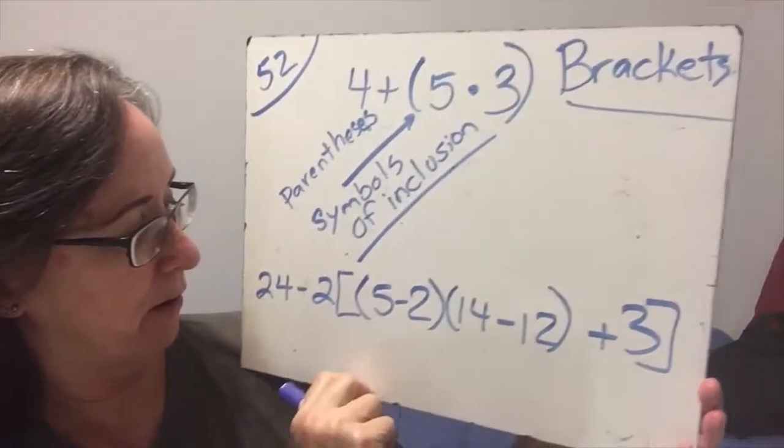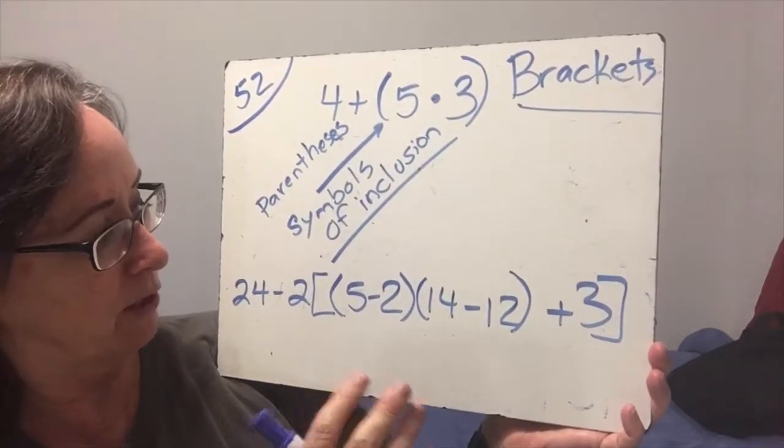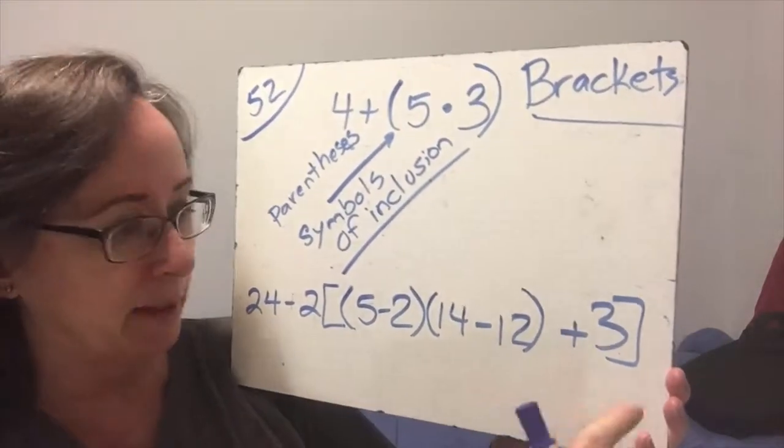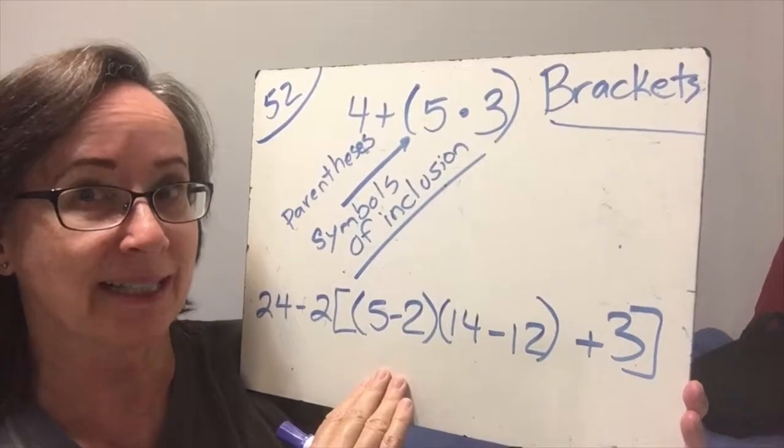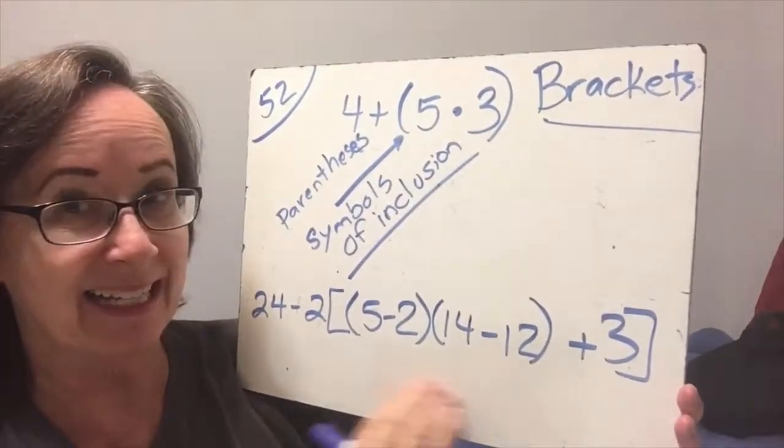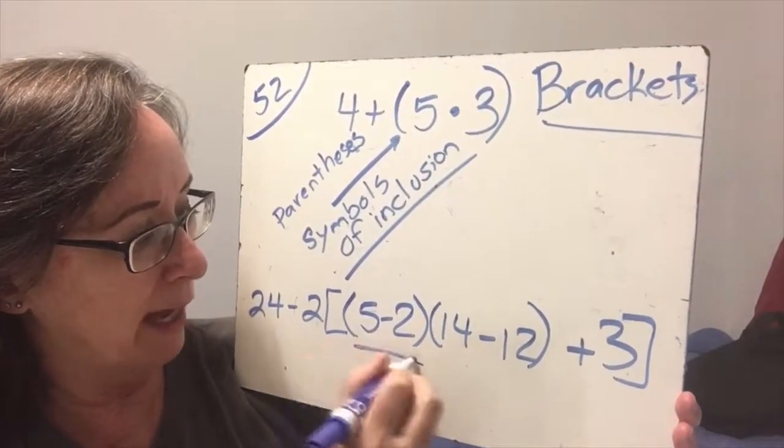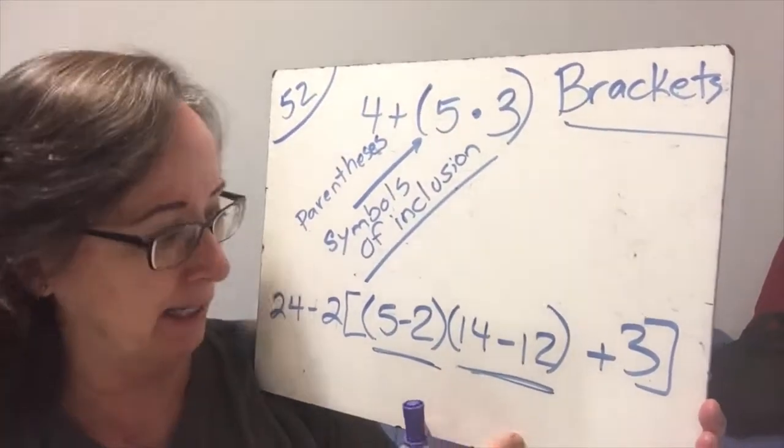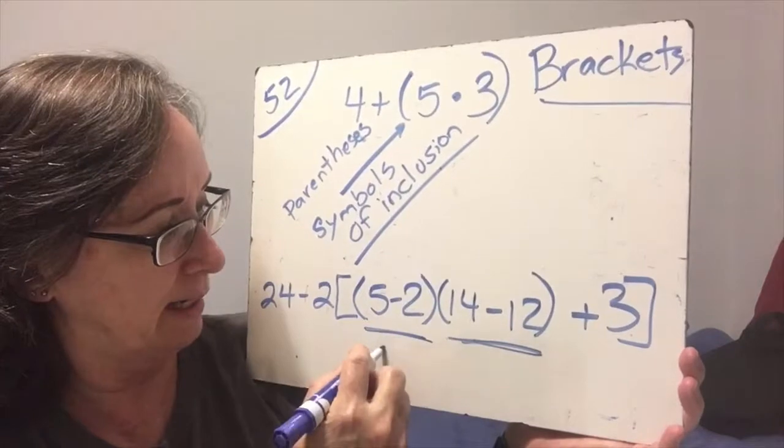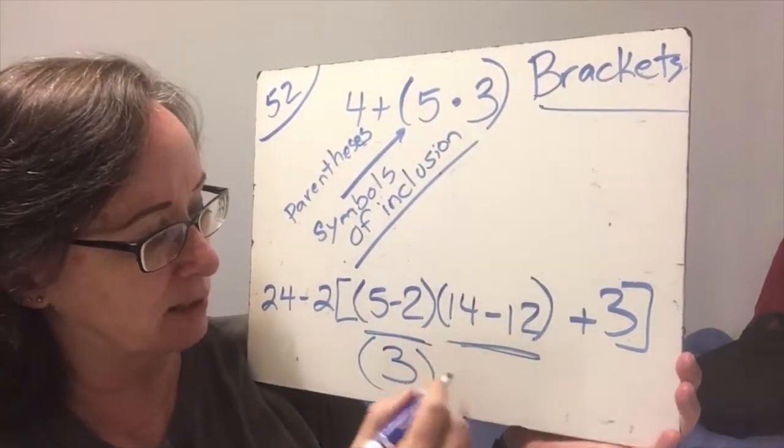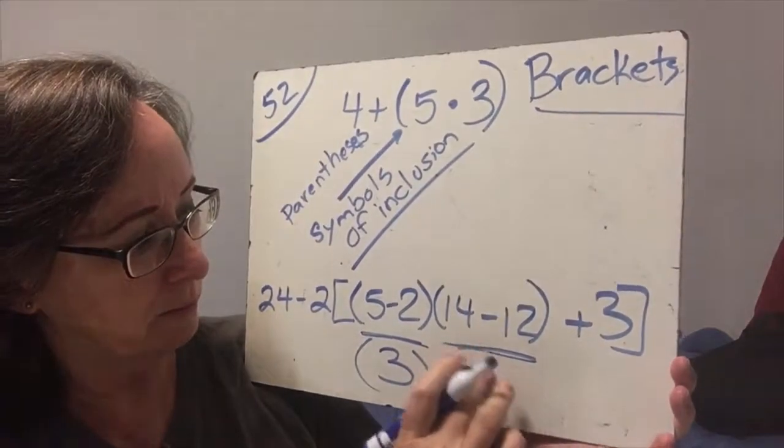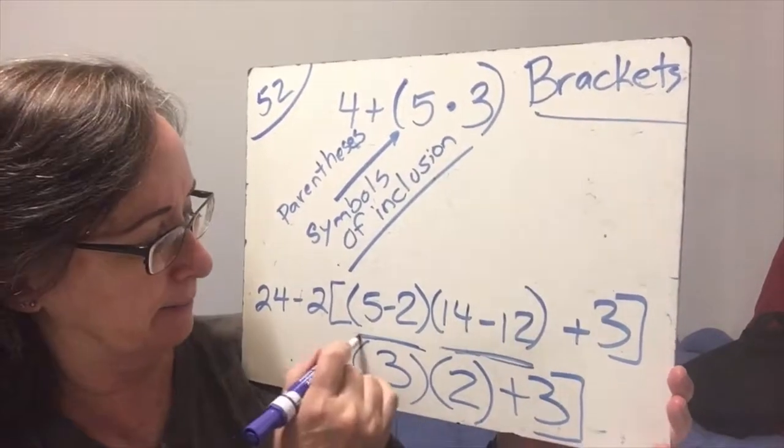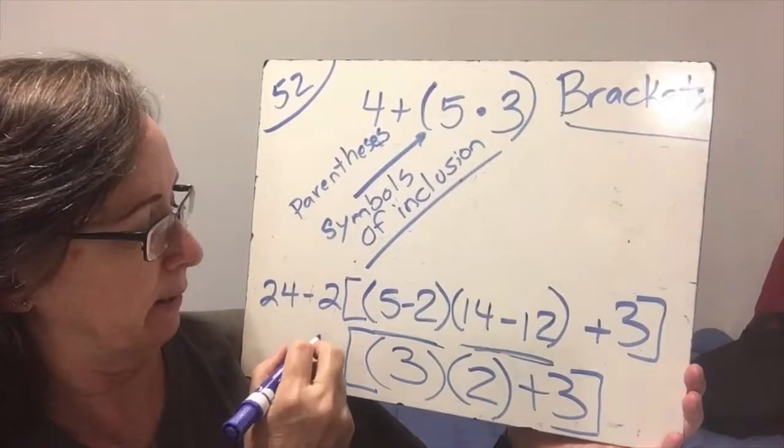So in this problem here that I have down here for you, we have a big bracket, but inside the bracket we have our own little problem here, and we're going to follow the order of operations inside the bracket. Inside the bracket I have one, two symbols of inclusion as I move left to right inside the bracket. So 5 minus 2 is 3, and then 14 minus 12 is 2, and then plus 3 bracket. Now I'm going to go ahead and bring the rest of this down.